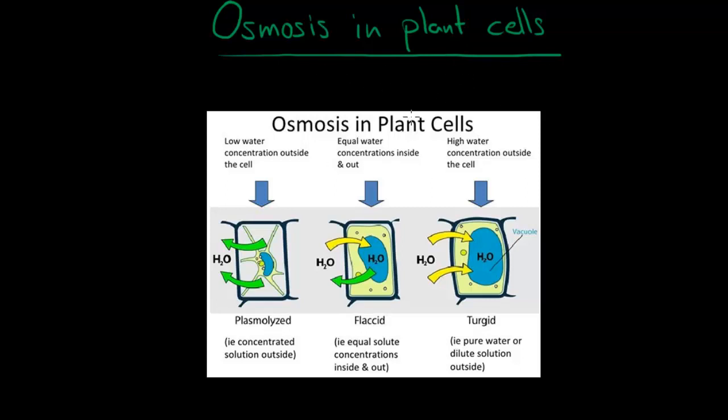Osmosis is very important in plants and especially in plant cells. Osmosis in plants drives a process known as transpiration, which is a process that we are going to see in a few minutes.